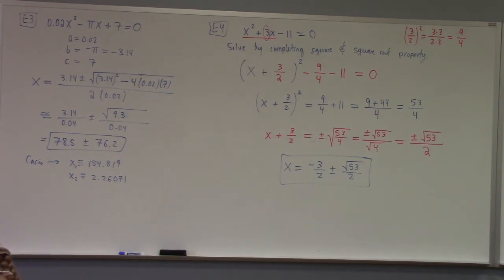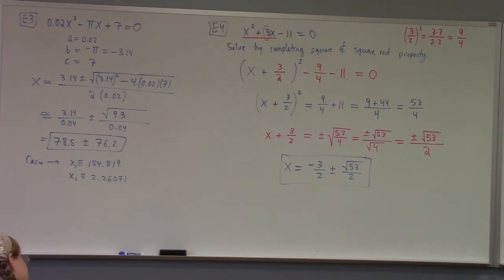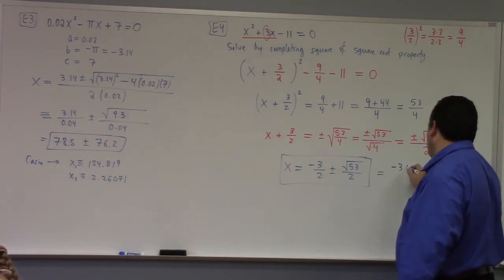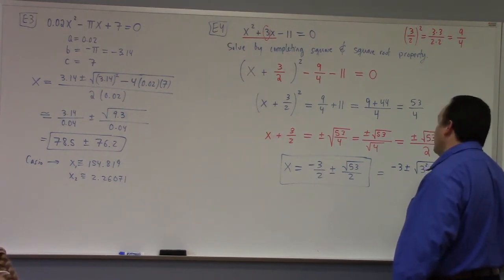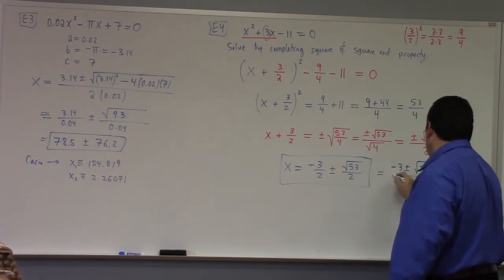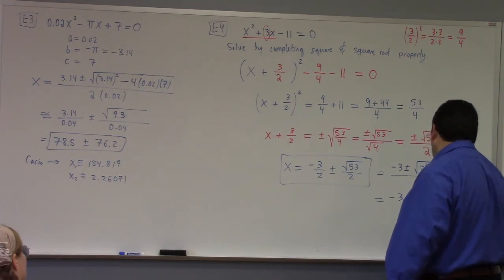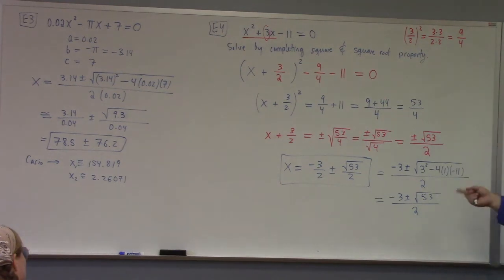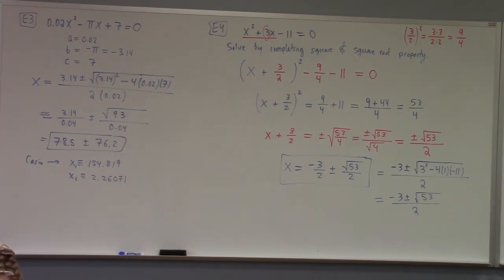Now if this was a problem where your textbook said solve by using the quadratic formula, I'd say that's not too bad of advice, because what we just did is about the same trouble as using the quadratic formula. What we got is exactly what the quadratic formula gives: negative b — that's negative 3 — plus or minus the square root of 3 squared minus 4 times 1 times negative 11, divided by 2. Which is negative 3 plus or minus the square root of 9 plus 44, which is 53, over 2. You might say the quadratic formula is easier here — I couldn't argue with you.